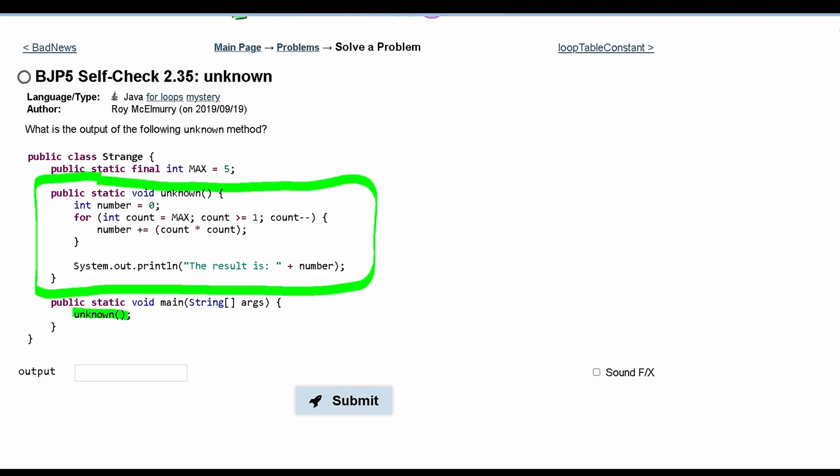Inside of here we have this public static final int max that we're probably going to use. So now we can start looking at our unknown method. First we have that our int number is equal to 0. So we have two variables so far. We have this int max, and this int number is equal to 0.